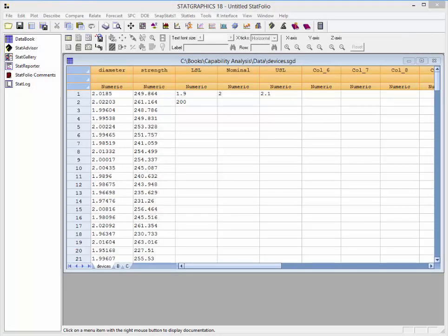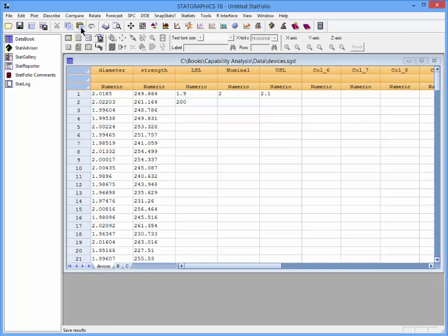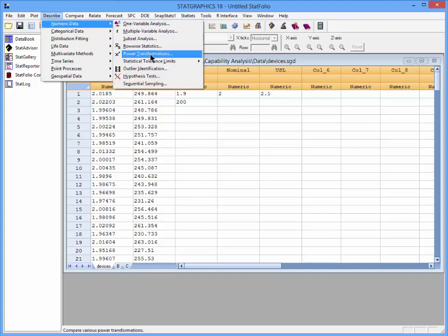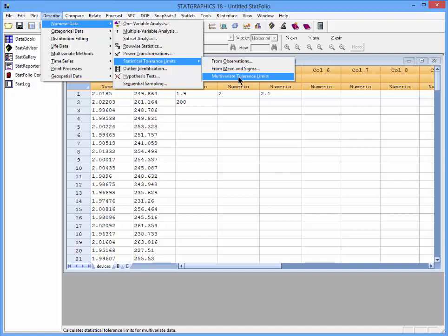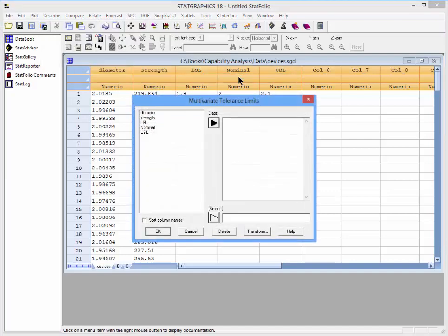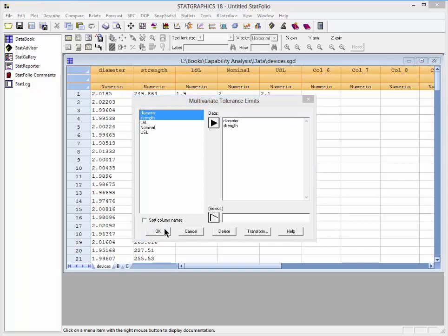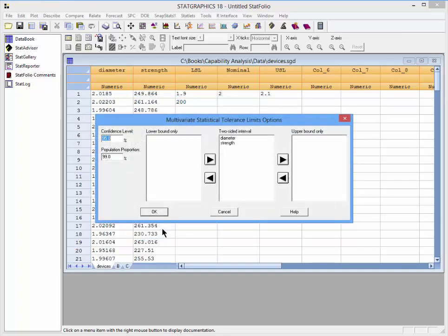In order to calculate the tolerance limits, I've loaded my data into the StatGraphics 18 data book. I'll now go to the top menu to Describe, Numeric Data, Statistical Tolerance Limits, and select Multivariate Tolerance Limits. On the data input dialog box, I'll put the names of the columns containing my data. When I press OK, the analysis options dialog box will be displayed.